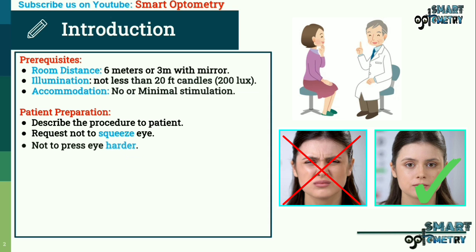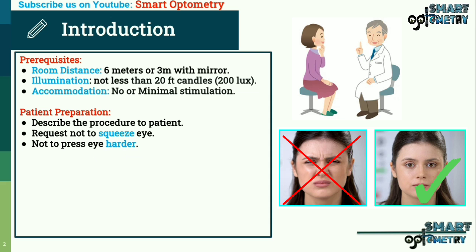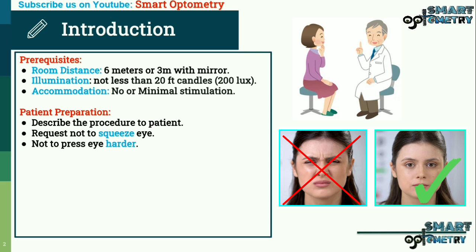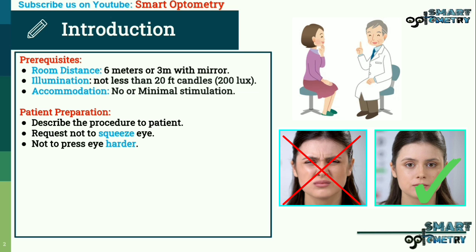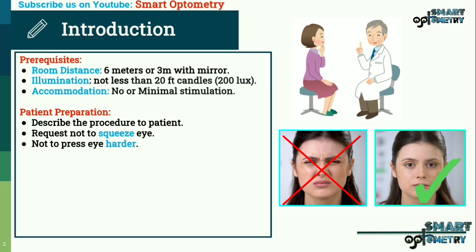Also request the patient not to press the eye hard. If they press hard on their eye, it will alter the shape of the eyeball, altering the curvature of the cornea or even the axial length, due to which the visual acuity will be less than normal.